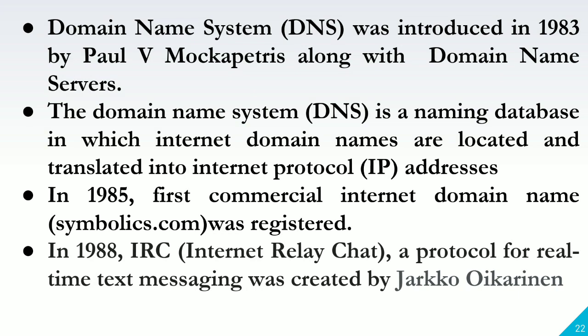The domain name system is a naming database in which internet domain names are located and translated into internet protocol addresses. DNS made addresses on the internet more human-friendly compared to their numerical IP address counterparts. IP addresses are a series of numbers and full stops. DNS servers allowed internet users to type in an easy-to-remember domain name and then converted it to the IP address automatically. In 1985, the first commercial internet domain name — Symbolics.com — was registered.